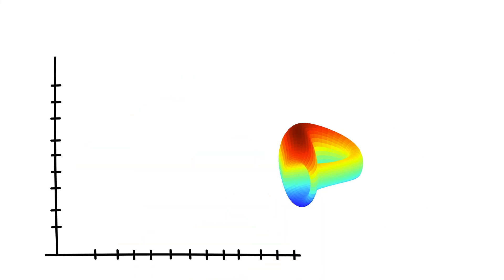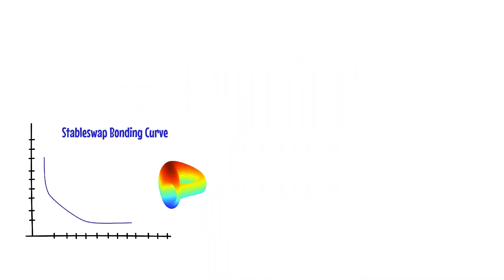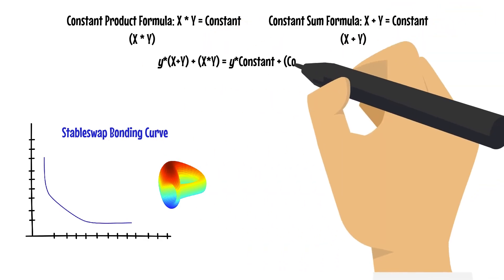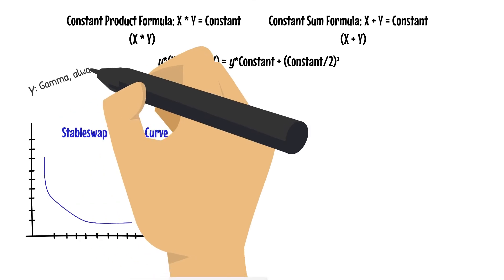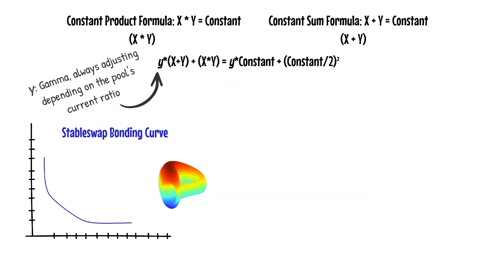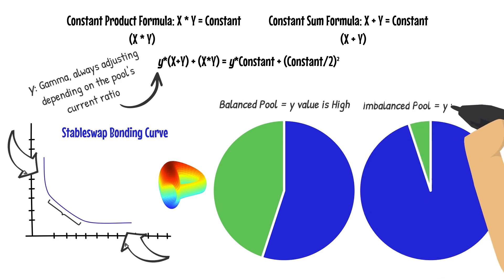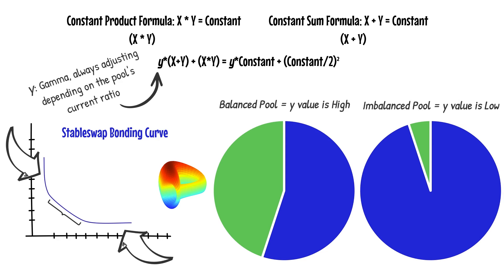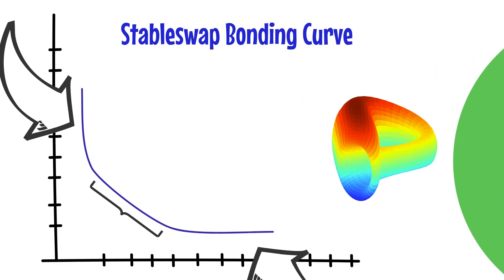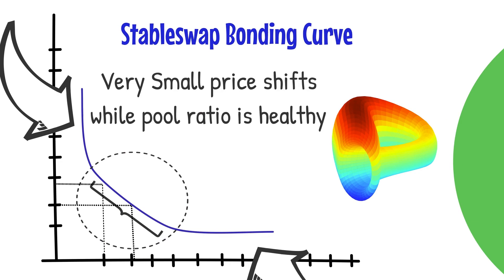Enter Curve Finance and the StableSwap bonding curve. To achieve this curve, StableSwap combines both the constant sum and constant product formulas and adds its own twist. The key is that gamma is an adjusting variable that is higher when the pool is more evenly balanced — in that case, the constant sum portion carries more weight, producing almost one-to-one exchanges. Once the pool falls below a certain balance threshold, the curve begins to act like a constant product, raising the price of the scarce token and preventing the pool from ever becoming completely one-sided.